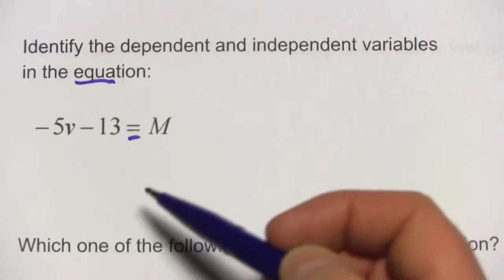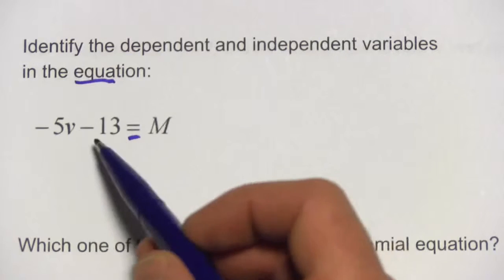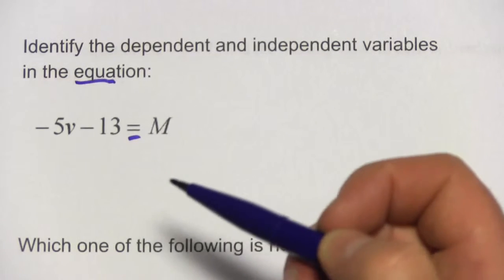And then it's got some multiple terms. In this case, it's got two different variables, an m, a v term here, and then a number. This is a polynomial equation.